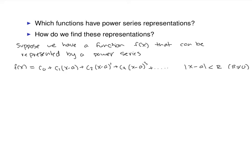The whole power series says you can express this function as an infinite polynomial — though they're not technically polynomials since polynomials are finite. The question is: what are these constants? I've made them very general: first constant, coefficient of the x term, coefficient of the x minus a squared term. How are those constants related to f? The first thing you can notice is that if you plug in a, every single term zeros out except for the first one, so f of a equals c-sub-zero.